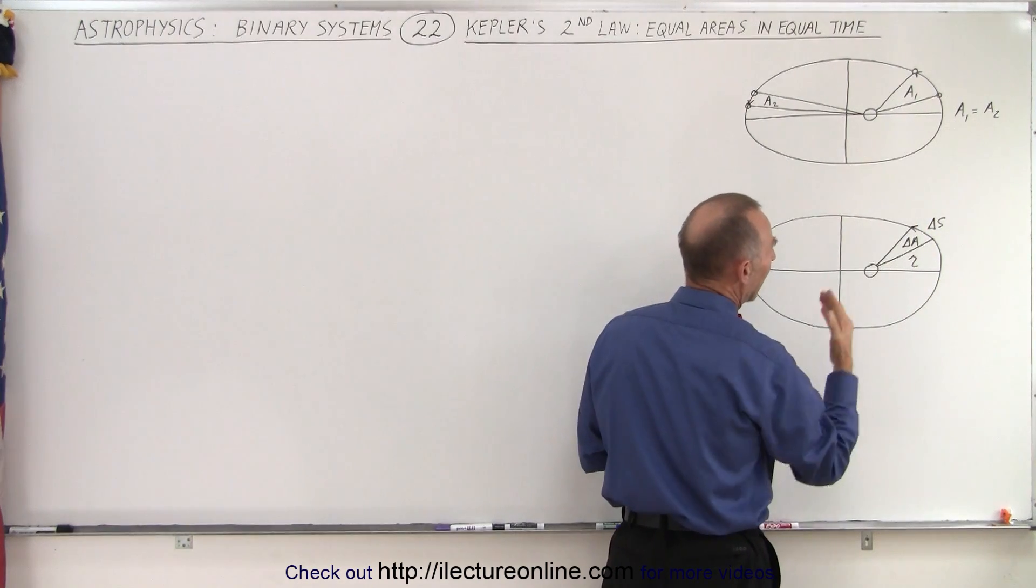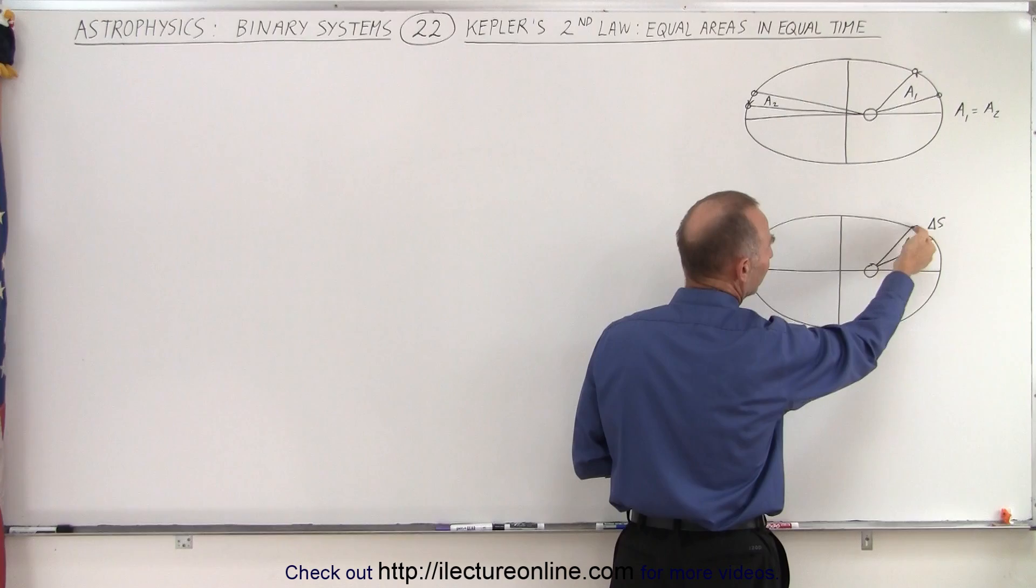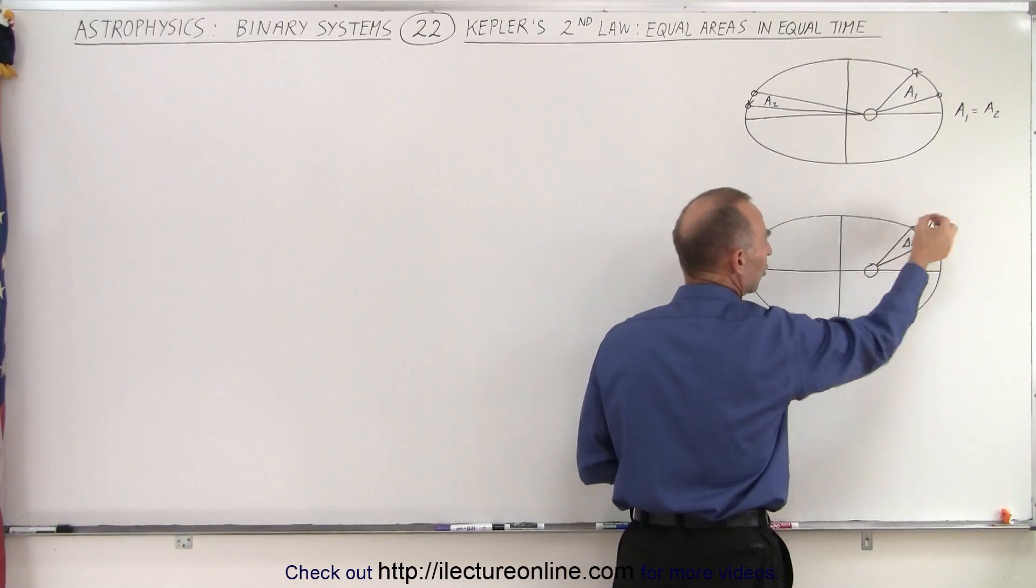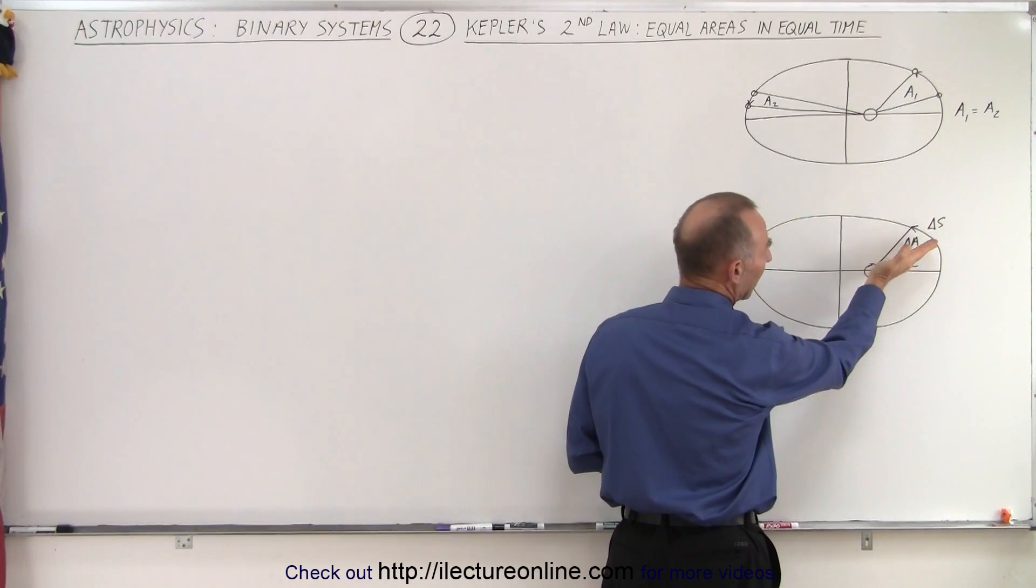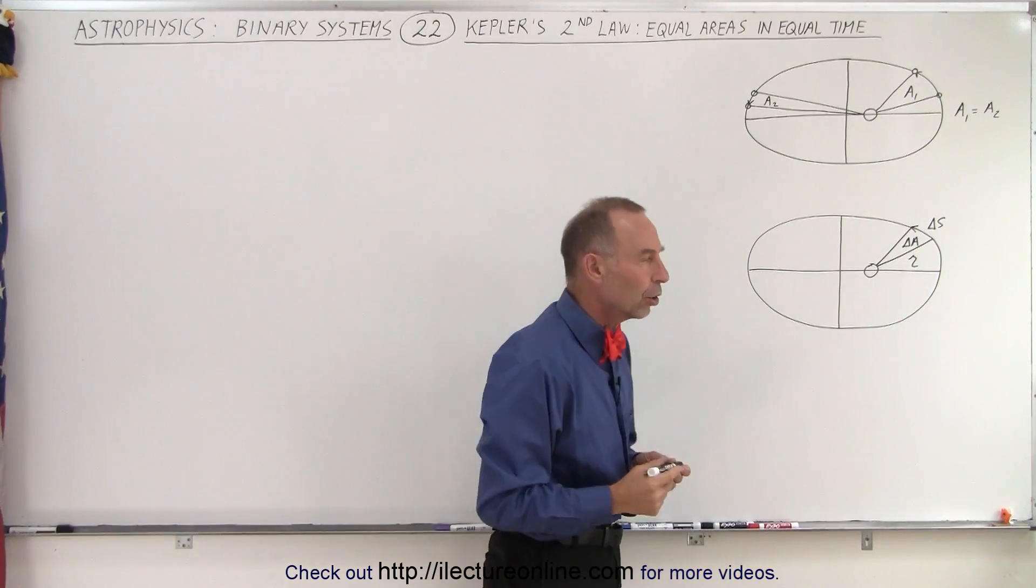And notice in a certain amount of time, delta t, it will cover a certain amount of distance along the line of motion, let's call it delta S, sweeping out the area delta A. The distance from the sun to the planet then would be considered R.